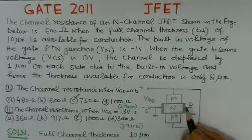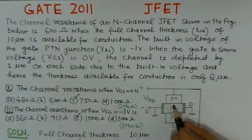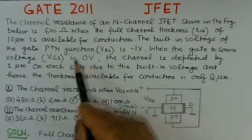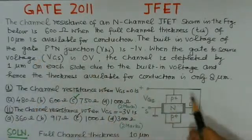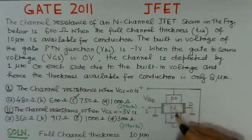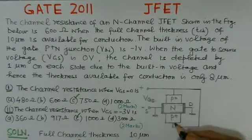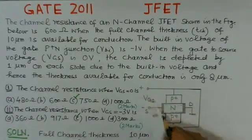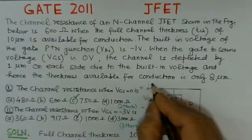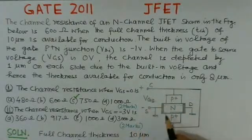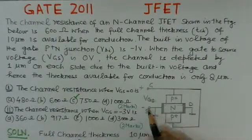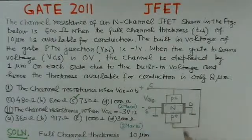Observing the figure, there is an N-type channel with metallic contacts and P-plus-N regions. There is a P-plus-N junction on either side of the channel — both these junctions are connected together and brought out as a gate terminal. The source terminal is taken as the ground terminal here.